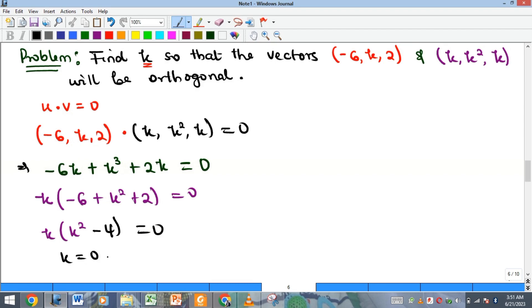That will give us minus 4, and that is equal to zero. So we can say that k is equal to zero, or k squared minus 4 is equal to zero. We've gotten the first solution.